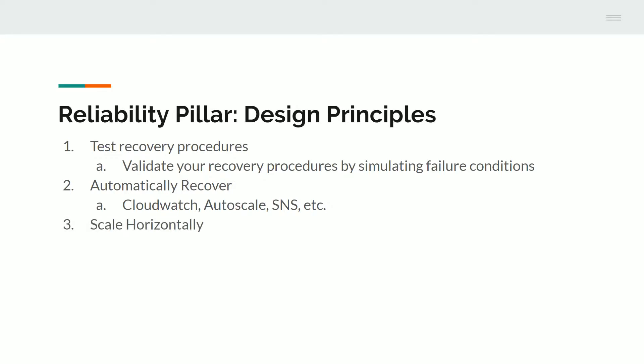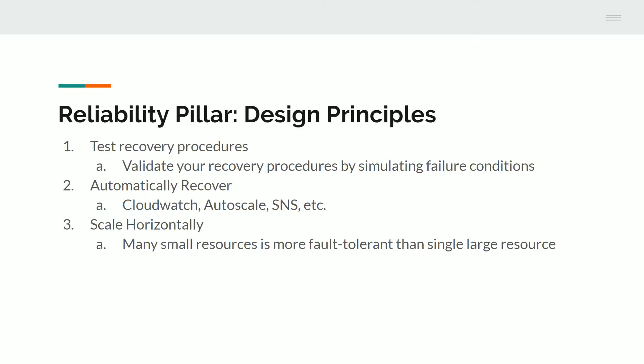Using the whole infrastructure that AWS provides, you can automatically recover. Scaling horizontally means that many small resources are more fault tolerant than a single large resource. In the example of EC2, you might choose to have several small AMIs as opposed to one or a few large AMIs. That way, if one instance fails, the others can quickly take its spot and the end user is none the wiser.